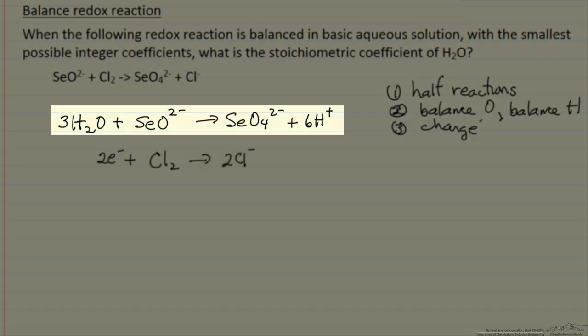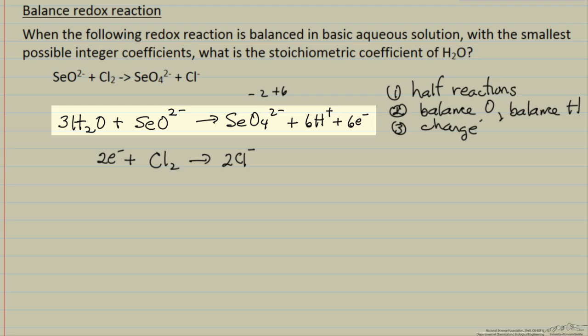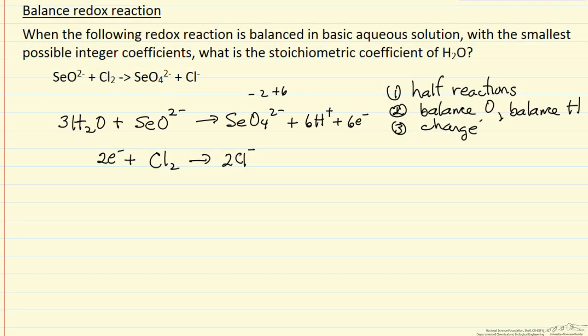We have a charge of minus two on the left side of the first equation and a charge of minus two plus six, so that's plus four. That means we need to add six electrons so the charge is minus two on both sides. Let's double check that, minus six plus six so then the charge balances.